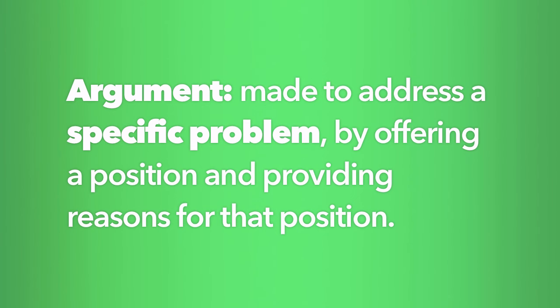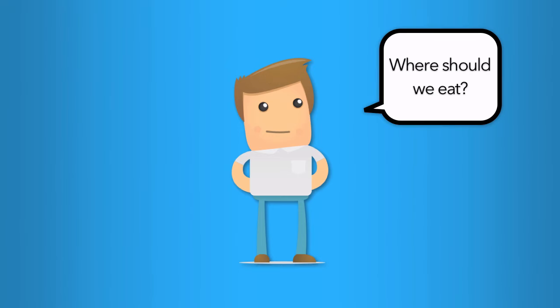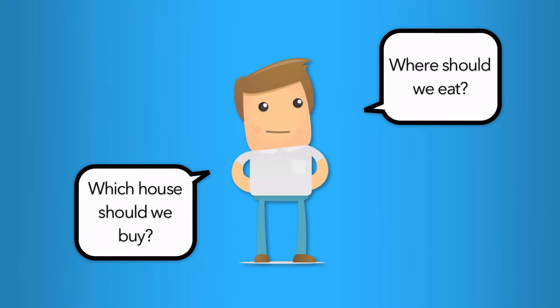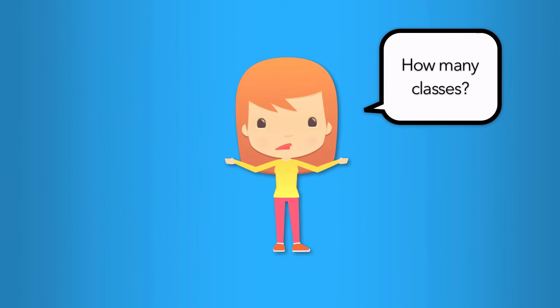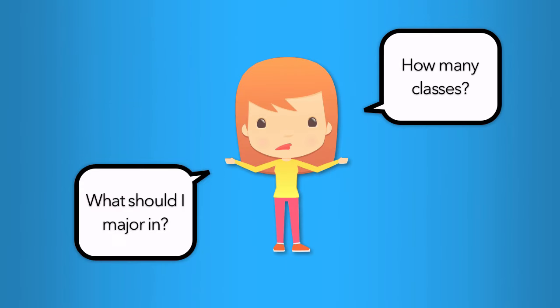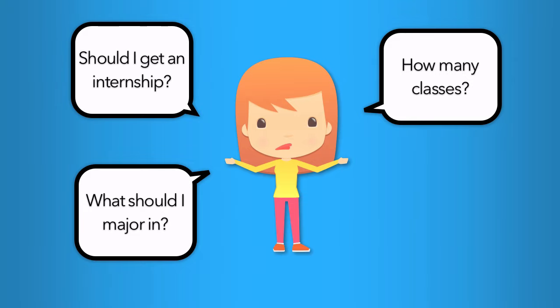Making an argument is all about staking out a position on a specific problem or issue. Think about all the different types of problems one could confront. There are problems in everyday life: where should we eat dinner, which house should we buy, which school is better for my kids? There are problems that college students deal with: how many classes should I take next semester, what should I major in, should I get an internship or study abroad?